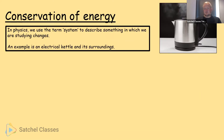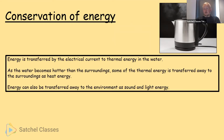Conservation of energy — you might have heard of this term before. In physics we use the term 'system' to describe something in which we're studying changes. An example is an electrical kettle and its surroundings. Energy is transferred by the electrical current in the wires to the thermal energy in the water. As the water becomes hotter than the surroundings, some thermal energy transfers to the air around it as heat, making it a little warmer. Energy can also be transferred away as sound and light — if you stand next to a kettle you know it's near boiling because you can hear it bubbling.